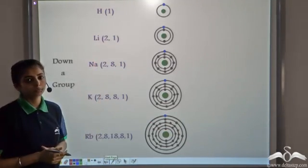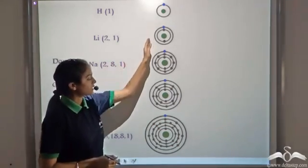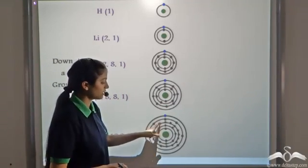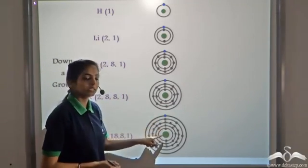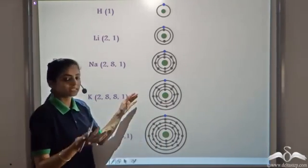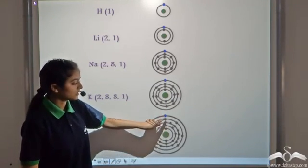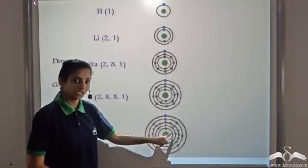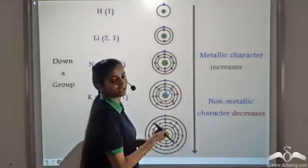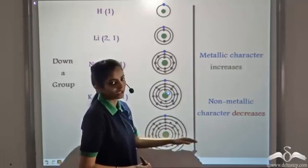Moving down a group in the periodic table, the atomic size increases because of the increased number of shells, which overweigh the increased nuclear charge. Metallic character is the ease to lose electrons. As the size increases, the outermost electrons are farther away from the nucleus. Therefore, the ease to remove the outermost electron increases. As the ease to remove these electrons increases, the metallic character increases. And so the non-metallic character on moving from top to bottom in a group decreases.